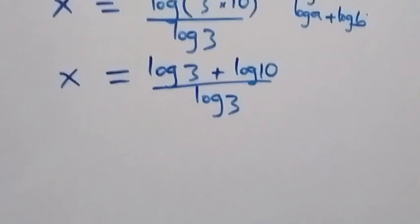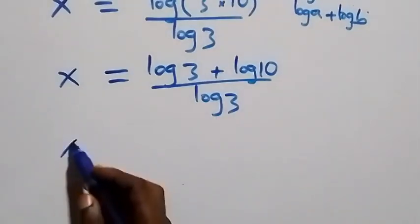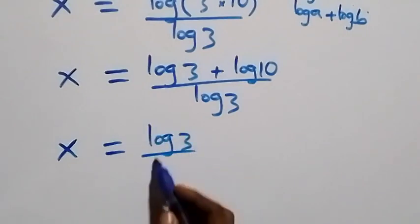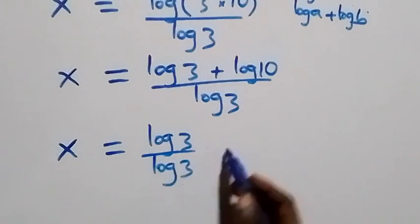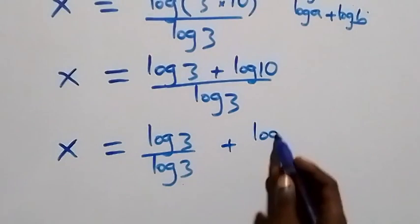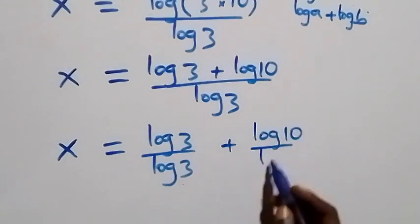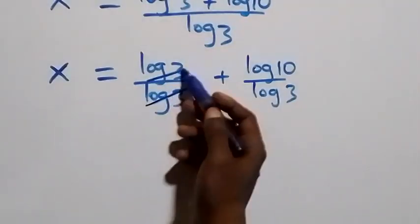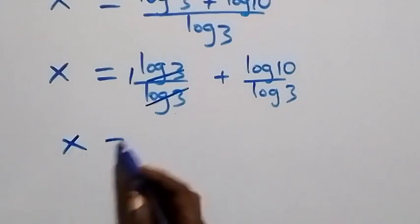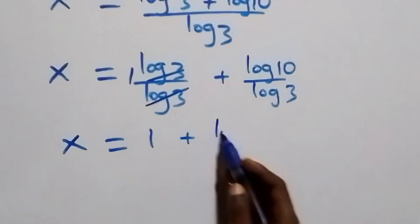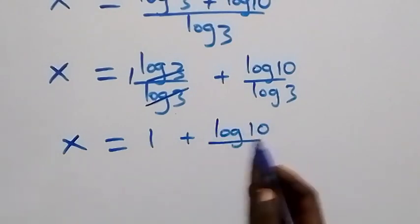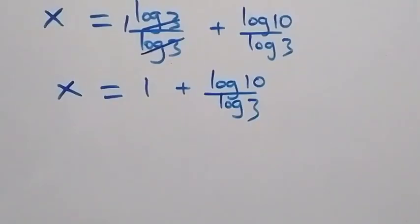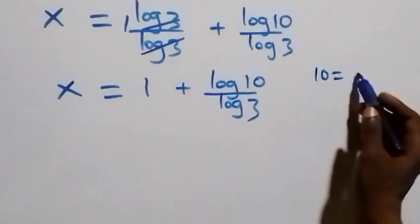We separate this into two fractions and have x equals log 3 over log 3, plus log 10 over log 3. The log 3 terms cancel each other, leaving one, which implies x equals 1 plus log 10 over log 3. We can also write 10 as 2 times 5.